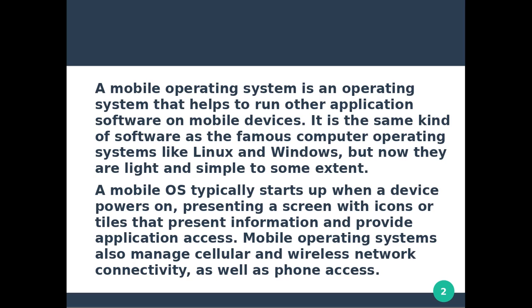A mobile operating system is an operating system that helps to run other application software on mobile devices. Application software is a system software. Application software performs a particular task, and the operating system manages application software.